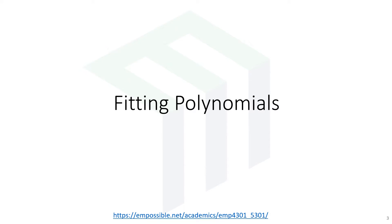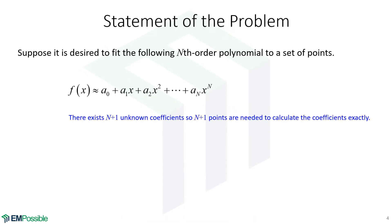Fitting polynomials. So let's say we have an nth order polynomial, so the highest power of x is n. Now let's count the number of coefficients it takes to do this curve fit. We have one, two, three, four, all the way up to n, but we also have this a sub zero. So we have actually n plus one coefficients to find. In order to fit an nth polynomial to a set of measured data, we need n plus one points to calculate them exactly.